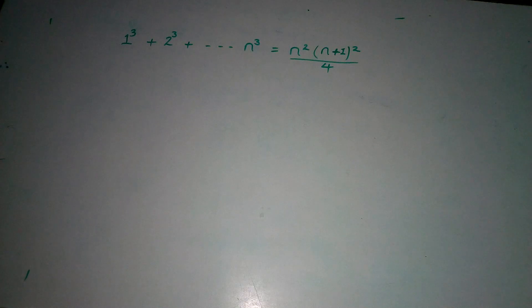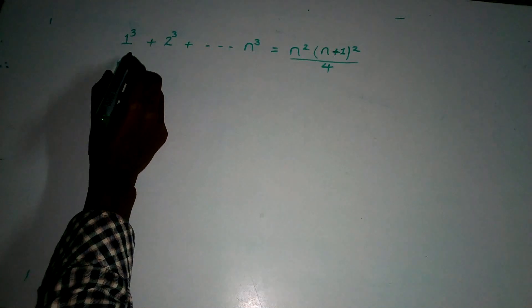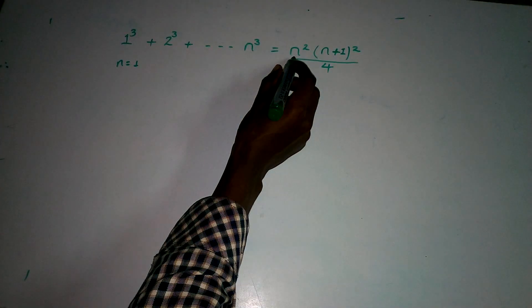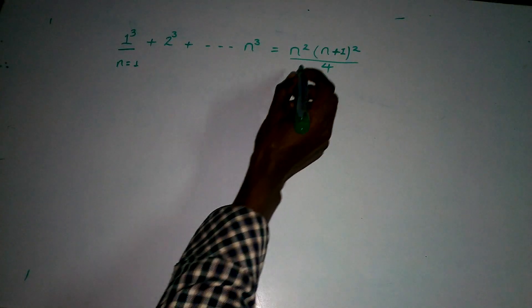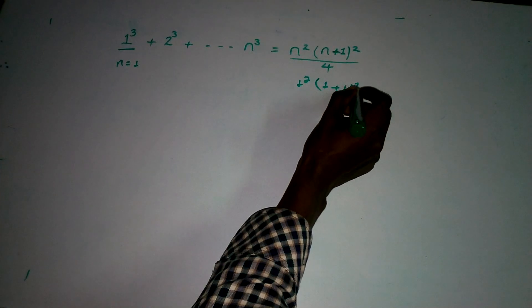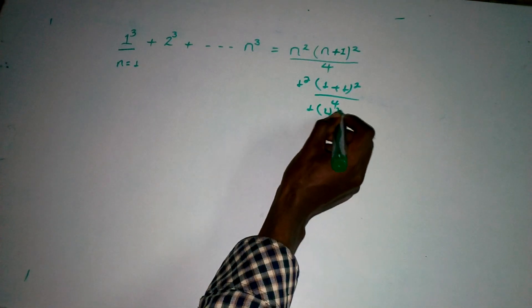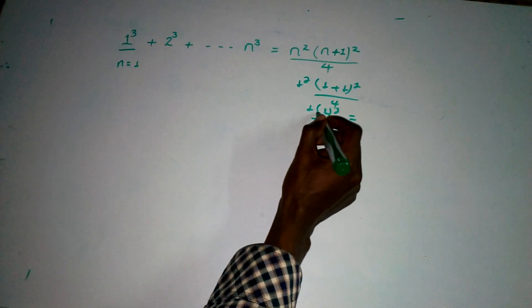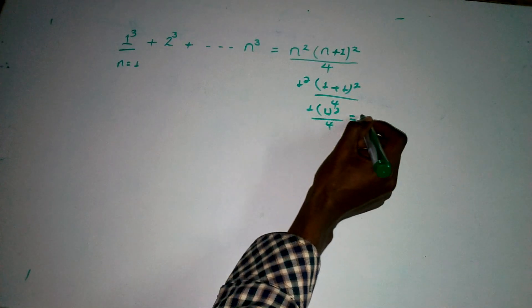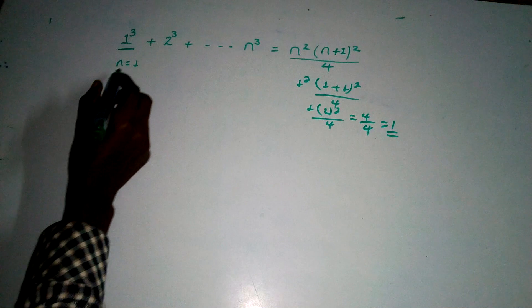We need to prove this for all natural numbers. Let's start with n is equal to 1. When n is equal to 1, the left side is 1 cubed. The right side is 1 square in the brackets 1 plus 1 the whole square over 4. This equals 1 times 2 square, which is 4 over 4, that is 1. So n is equal to 1 is verified.